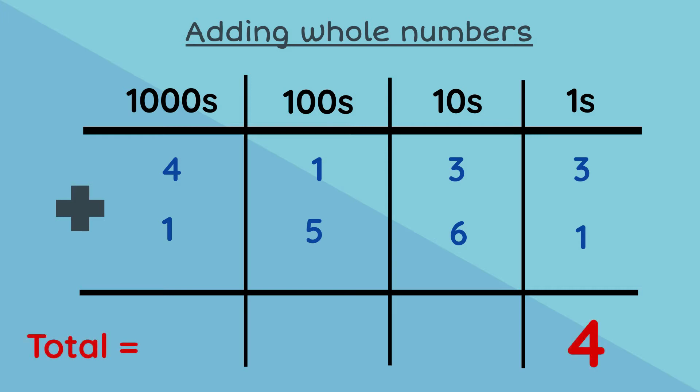Three plus one equals four, six plus three equals nine, five plus one equals six, four plus one equals five. Our answer is 5694.